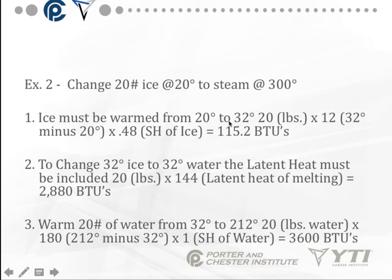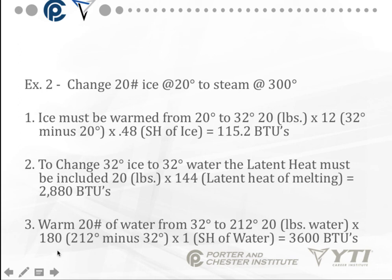Our first step takes 20 degrees to 32 degrees for 20 pounds: 20 times 12 times 0.48, because the specific heat of ice is 0.48. That gives us 115.2 BTUs just to reach the melting point. Then to change 32-degree ice to 32-degree water: 20 pounds times 144 (the latent heat of melting) equals 2,880 BTUs. Then from 32-degree water to 212 degrees: 20 pounds times 180 times 1 equals 3,600 BTUs. We still have one more change of state, but you get the general idea.